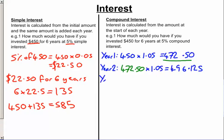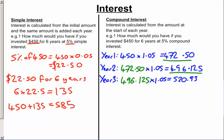In year three, we use the value from the end of year two: 496.125, and multiply that by 1.05, giving us 520.93125. We'd have to carry that method on for year four, year five, and year six to get the total amount. The problem is that's quite long-winded, particularly if we're talking about 20, 50, or 100 years — we'd have to do 100 calculations. So can we make it shorter?